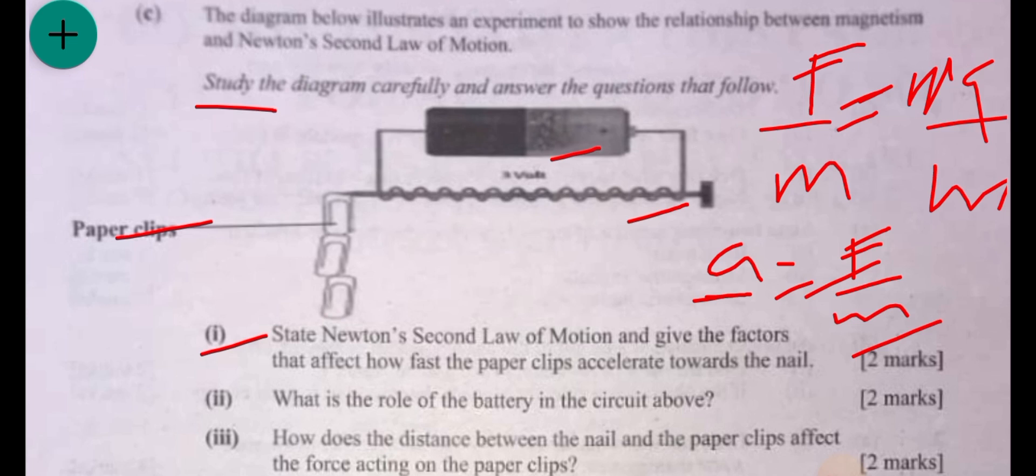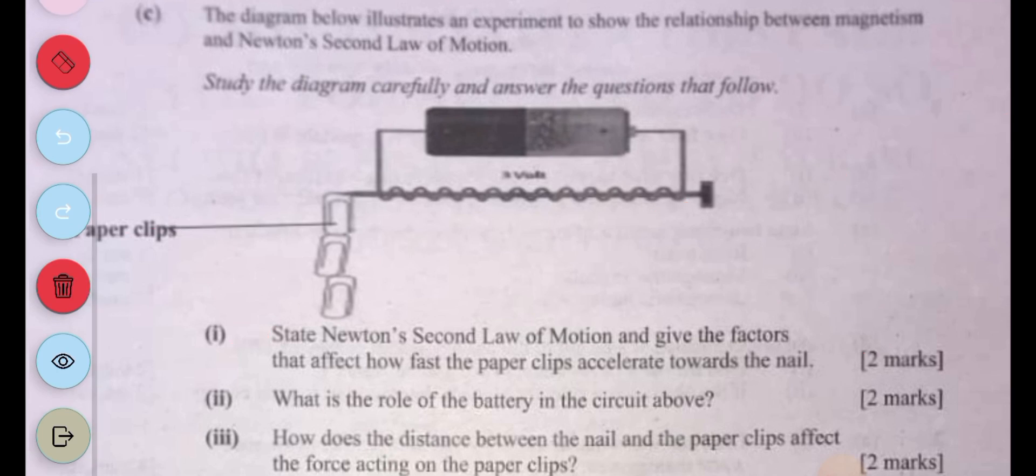The factors that affect how fast the paperclips accelerate towards the nail include: one, the force exerted by the electromagnet; two, the mass of the paperclip; and three, the distance between the nail and the paperclip.